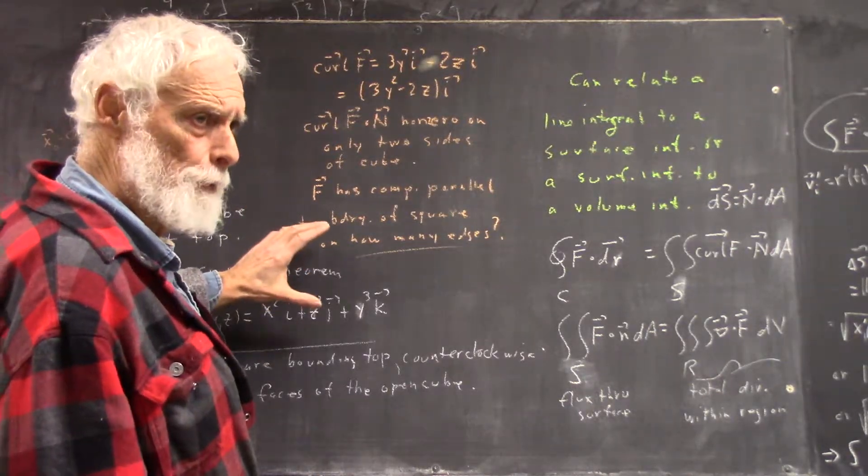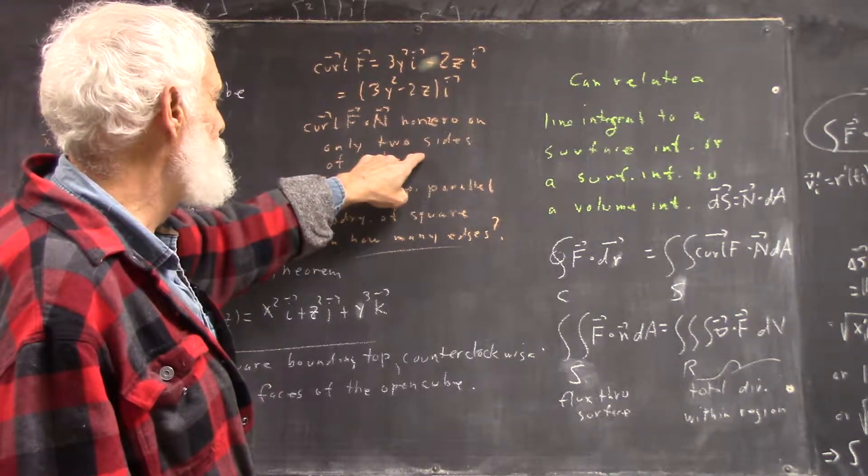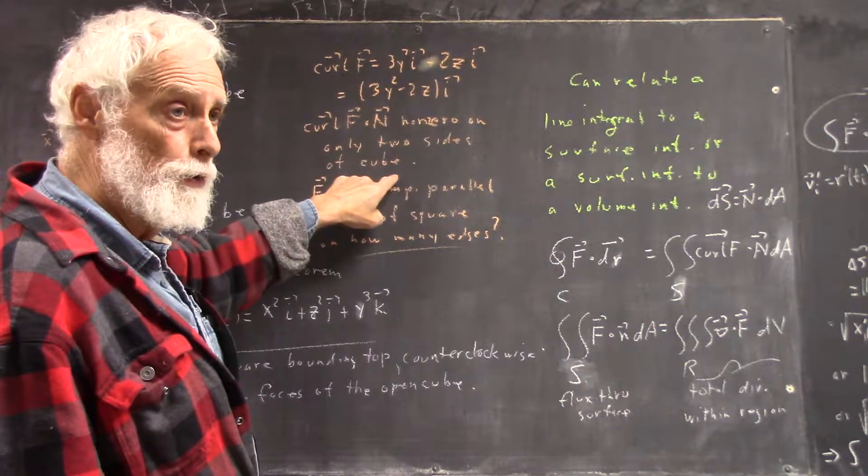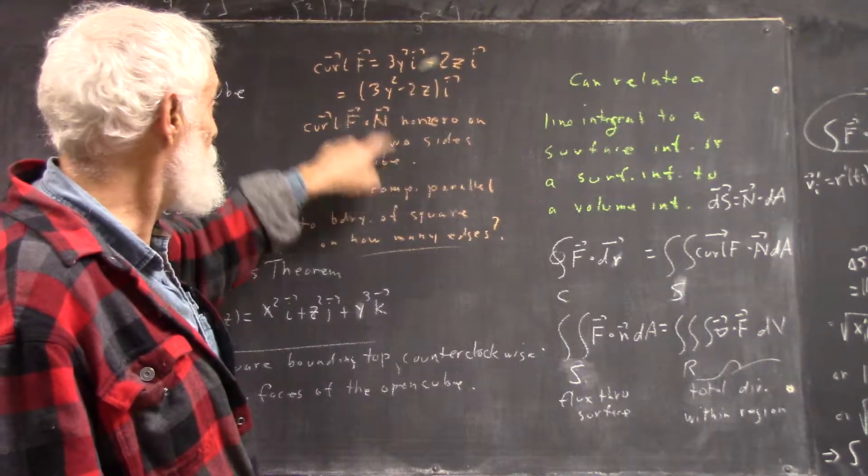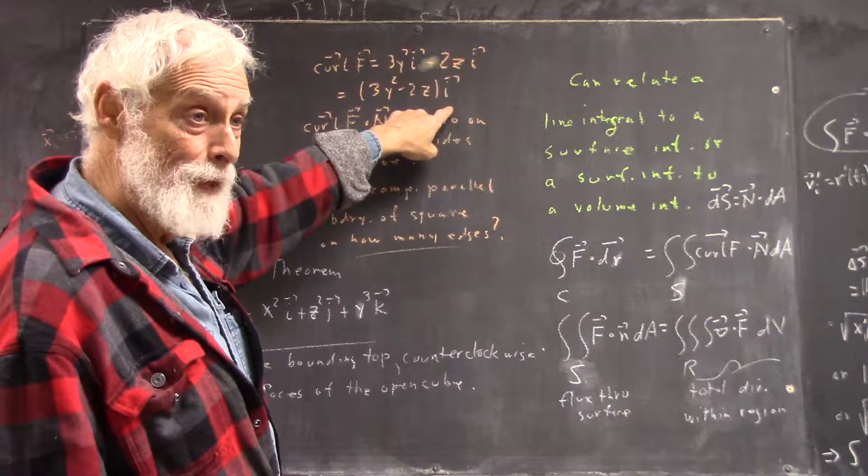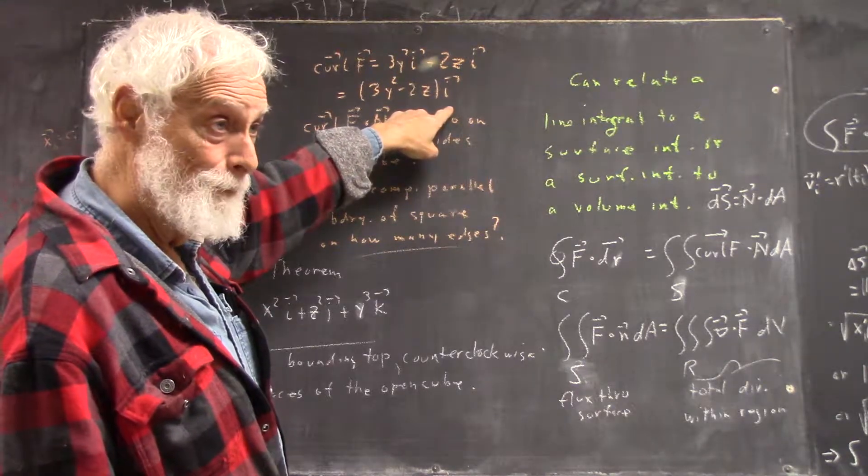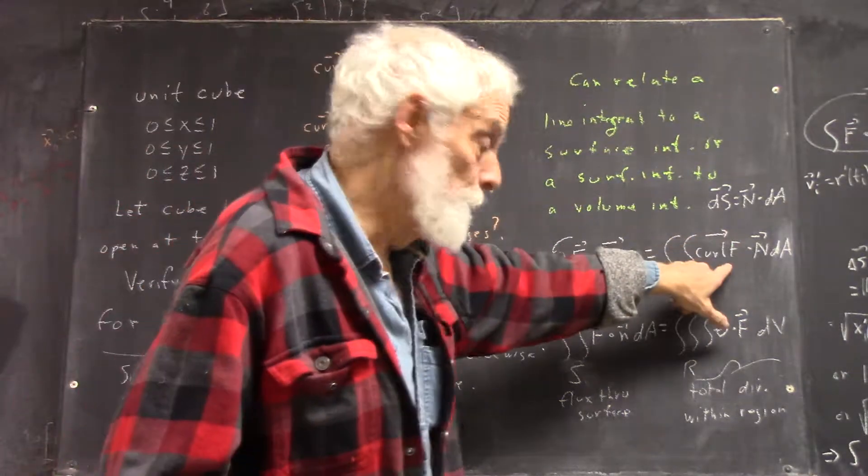Anyhow, the curl of F dot N is non-zero only on two sides of the cube. Why is that? Because the curl of F is a multiple of the I vector, and unless the normal vector is a multiple of the I vector, you're going to get zero from this.